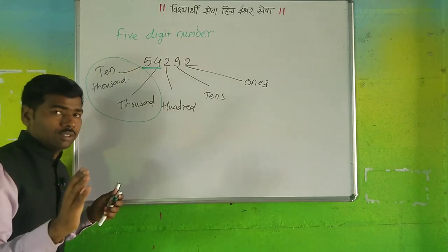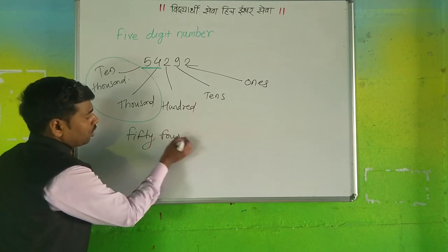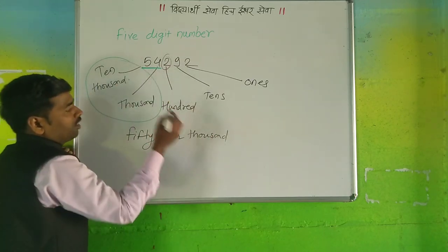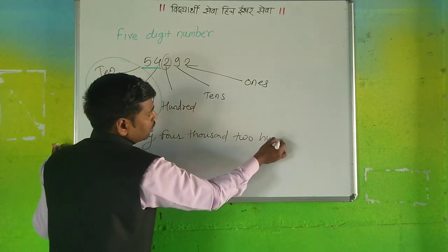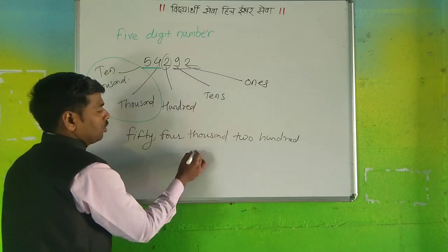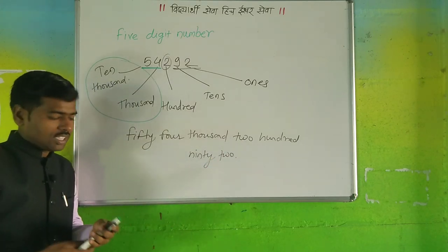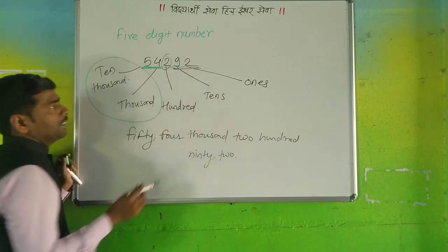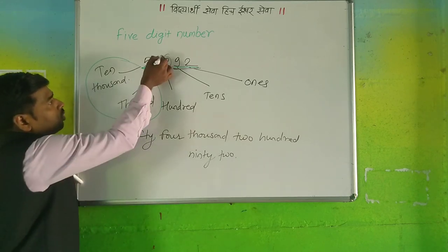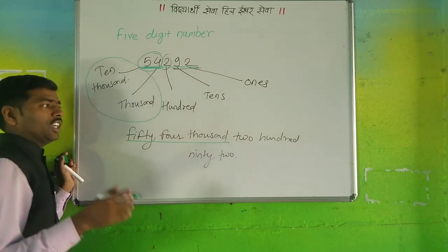That means 54,000. It is very simple — 54,000. And then the digit on the hundreds place gives two hundred. The last two digits are also a single group, giving 92. So altogether: 54,000 and the remaining two hundred and ninety-two.